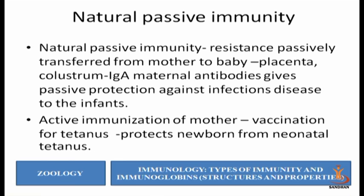Natural passive immunity is resistance passively transferred from mother to baby. The baby's immune system is not actively involved; instead, the baby receives ready-made antibodies. Through the placenta, some immunoglobulins can pass from the mother to the fetus. Colostrum — the first milk after delivery — is also very rich in maternal antibodies. It is very important to feed the baby with the very first milk of the mother, as it is rich in immunoglobulins which will protect the baby from infections, since the baby's immune system is not yet fully functional at a very early stage.